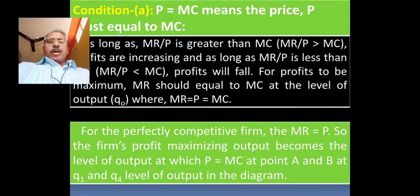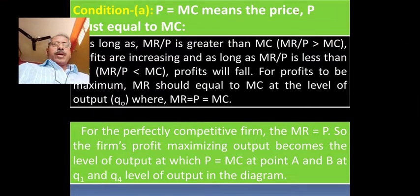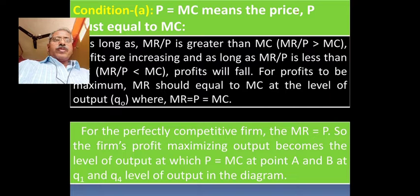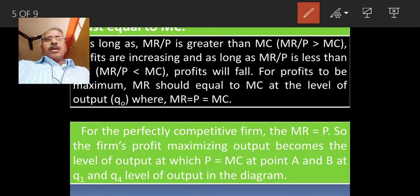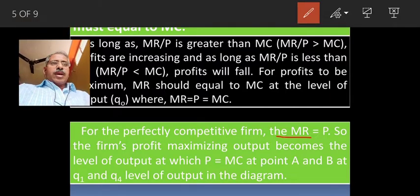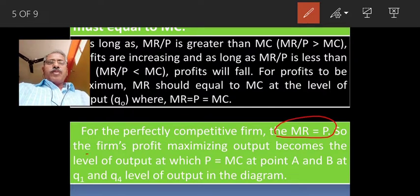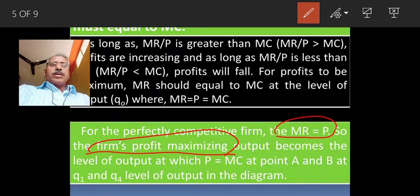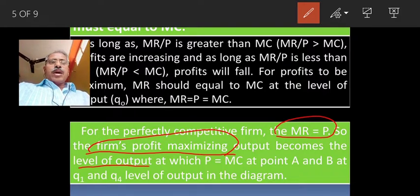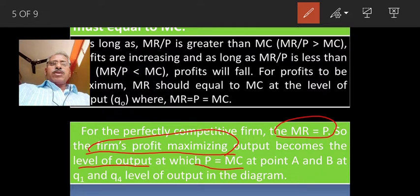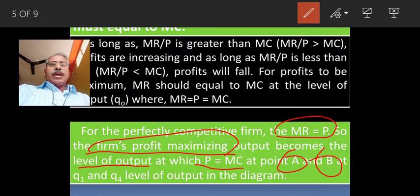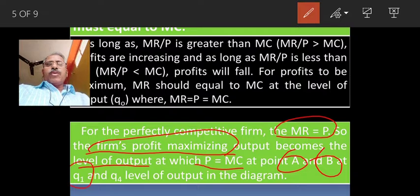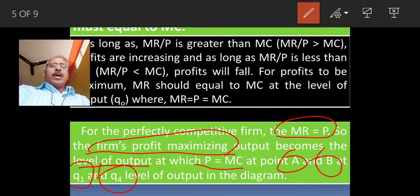For the perfectly competitive firm, marginal revenue equals price. So firm's profit maximizing output becomes the level of output at which price equals marginal cost at point A and also B in the diagram at Q1 and Q4 level of the output.